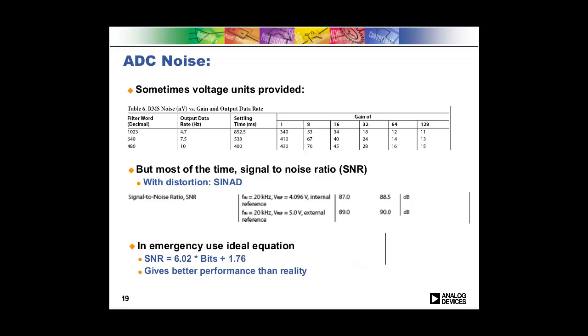But most of the time, it's specified in a ratio. So this ratio is called signal to noise ratio. And what that is, is the maximum signal that the ADC can measure over the noise of the ADC. So that's specified in dB. Occasionally, they'll also throw in distortion into this ratio. So they'll do the signal over the noise and the distortion. If they do that, instead of calling it SNR, it's called SINAD. So use this number to figure out the noise of your system.